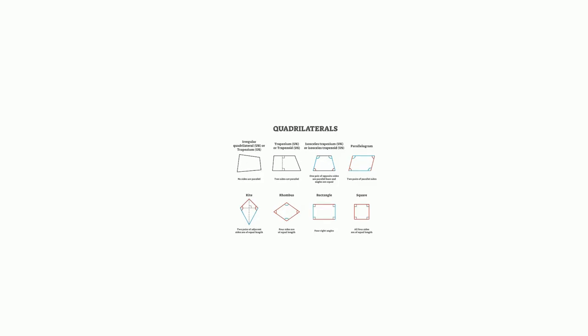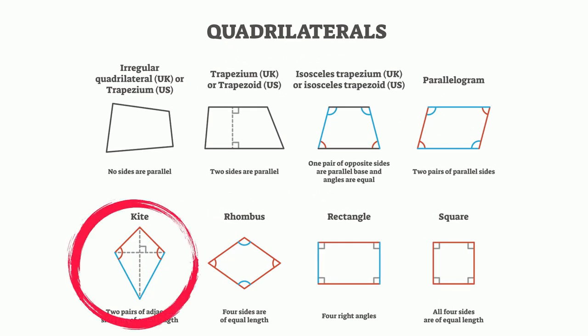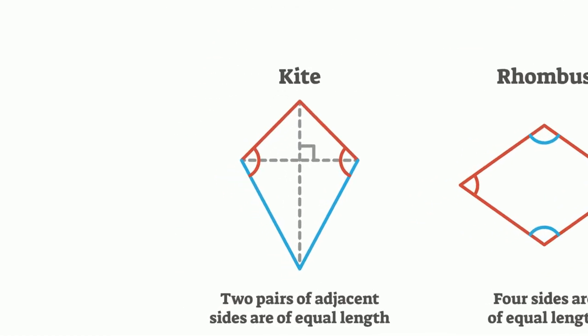Welcome to MooMooMath and Science and the Properties of a Kite in Geometry. A kite has four sides, therefore it is a quadrilateral.